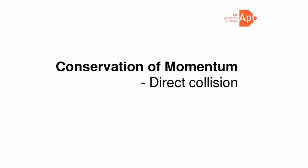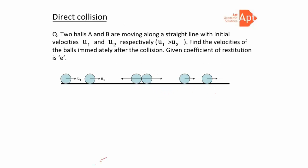Today we will discuss conservation of momentum, and specifically direct collision. We are taking a special case where two balls A and B are moving along a straight line with initial velocities u1 and u2 respectively, where u1 is greater than u2. We need to find the velocities of both balls immediately after the collision, given the coefficient of restitution is e.